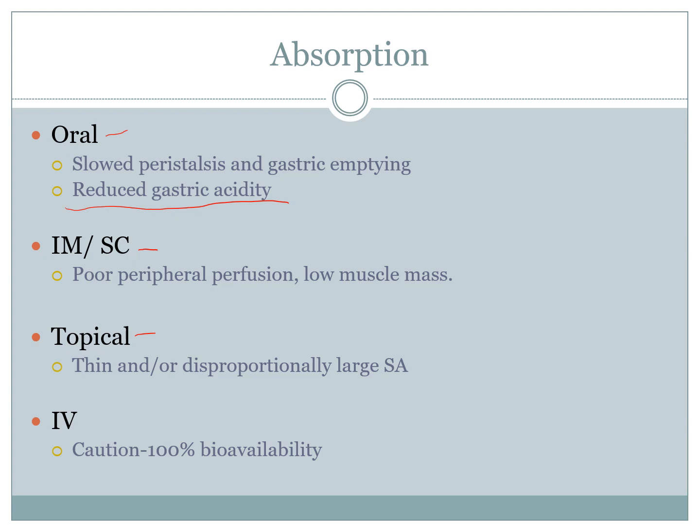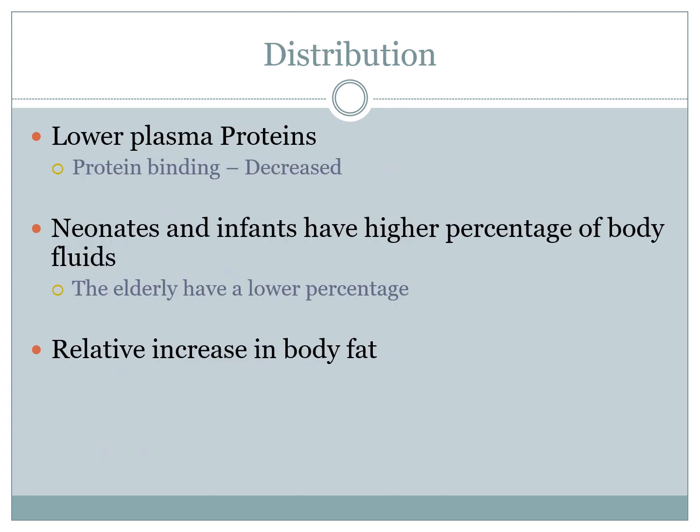IV is the preferred method, especially for pediatrics. It's more controllable, has 100% bioavailability, and is titratable for size. However, because of the unpredictability associated with the lack of studies, there needs to be caution when giving IV because it goes straight to the receptor sites and is only subject to the distribution side of pharmacokinetics — absorption is immediate.